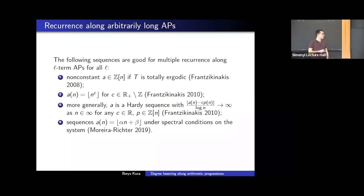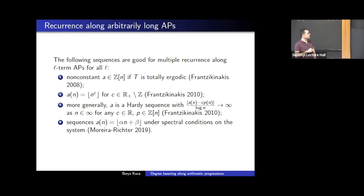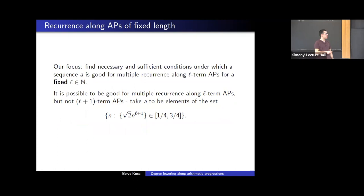There have also been more results — for instance, Moreira and Richter classified spectral conditions on the system under which generalized linear functions are good for multiple recurrence. For all these sequences, we know they are good for multiple recurrence along arithmetic progressions of arbitrary length. Our focus today is different: we want to find necessary and sufficient conditions under which a sequence is good for multiple recurrence along arithmetic progressions of some fixed length.